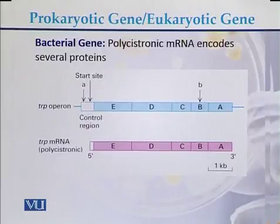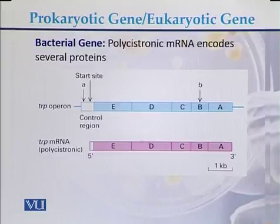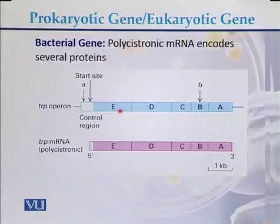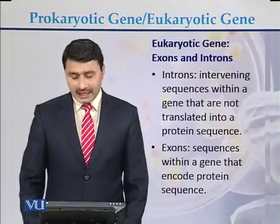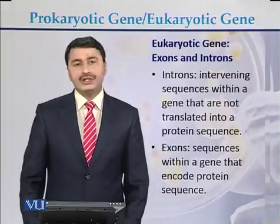This is the diagram of a bacterial gene with polycystronic messenger RNA encoding several proteins. Here we can see gene E, gene D, gene C, gene B, and gene A. All five genes are placed side by side and they are transcribed simultaneously in the form of polycystronic messenger RNA.